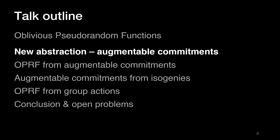The plan for the talk is to first introduce a new abstraction called augmentable commitments, then use this abstraction to present our construction of an oblivious PRF. Then we'll see how to instantiate this abstraction using isogenies. We'll also see a little bit of our second construction from commutative group actions, and at the end we'll conclude and discuss some open problems.